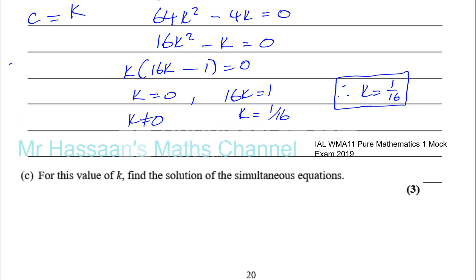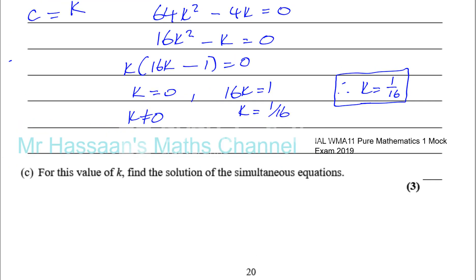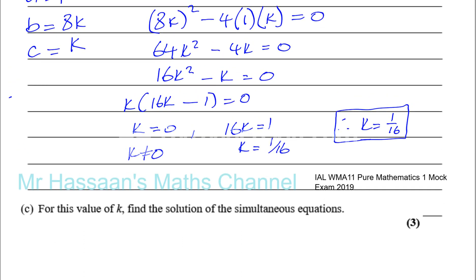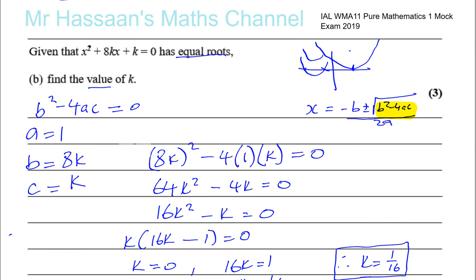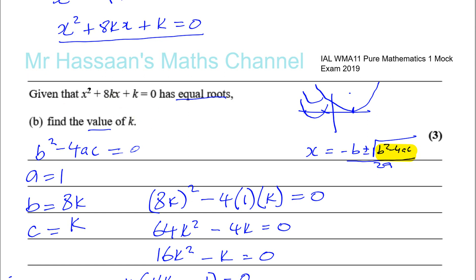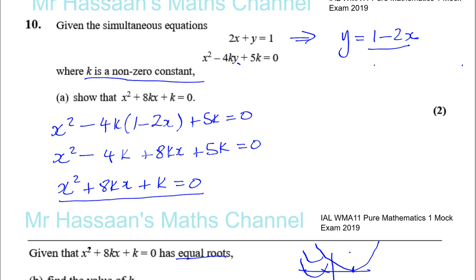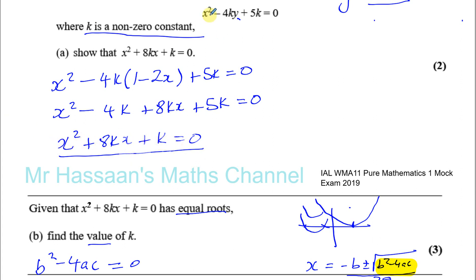For this value of k, find the solution of the simultaneous equations. Some students go back to the original equations and substitute k equals 1 over 16 there — that would give the correct answer if done properly. However, what you should realize is that the equation x squared plus 8kx plus k equals 0 is already the result of solving simultaneously, so we just need to substitute k equals 1 over 16 into it and solve for x.